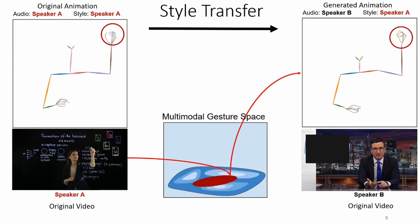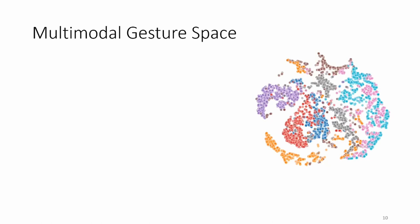Additionally, this gesture space is capable of learning style manifolds of many speakers, and hence can perform many-to-many style transfers.